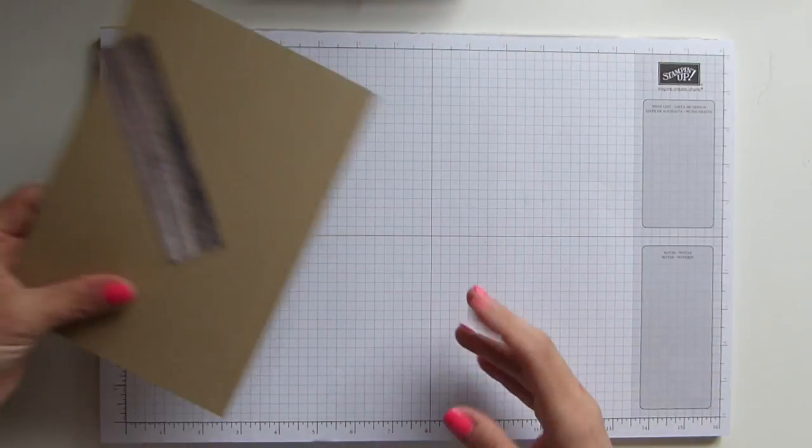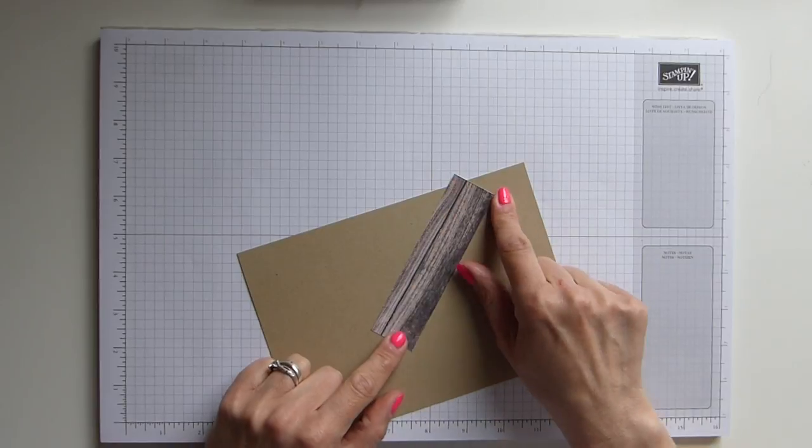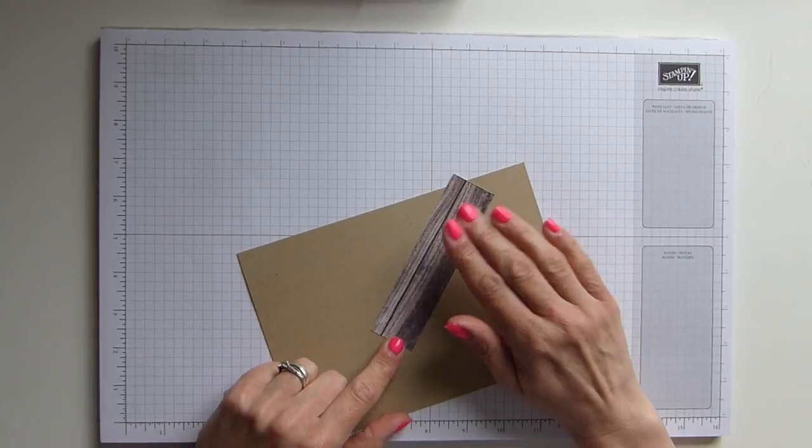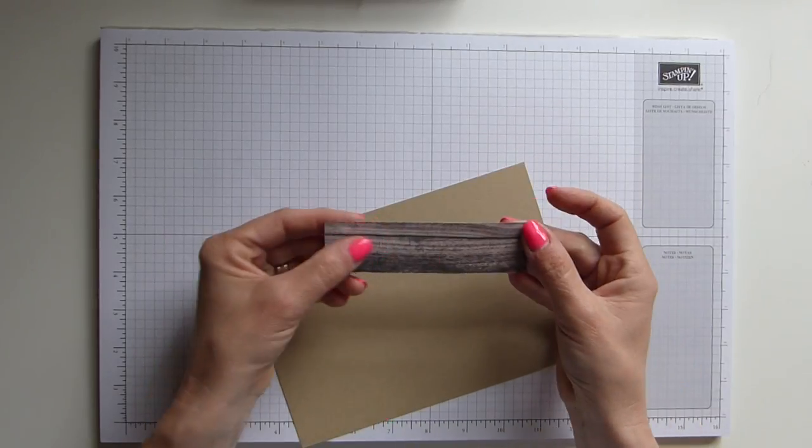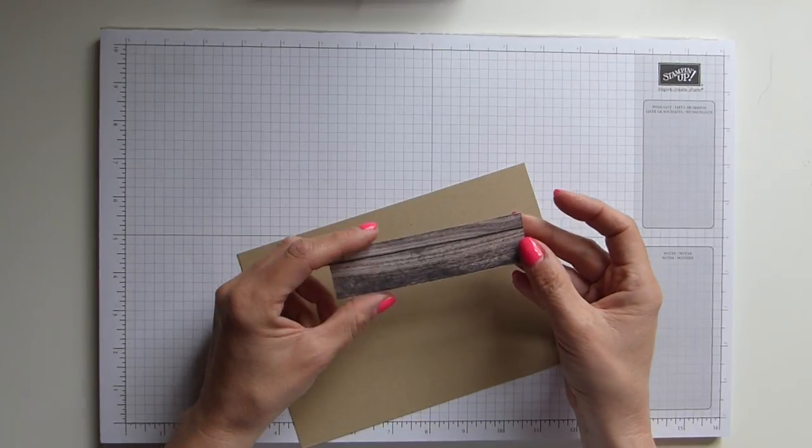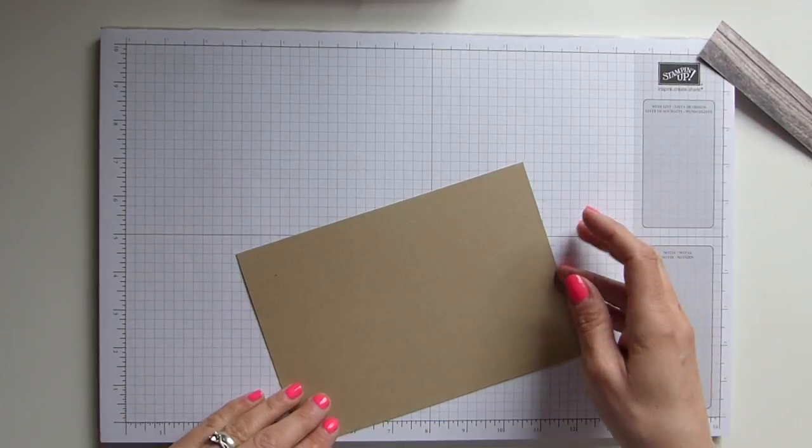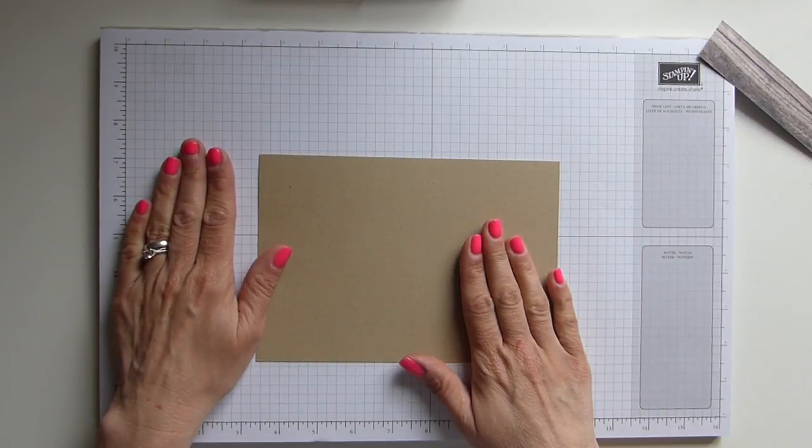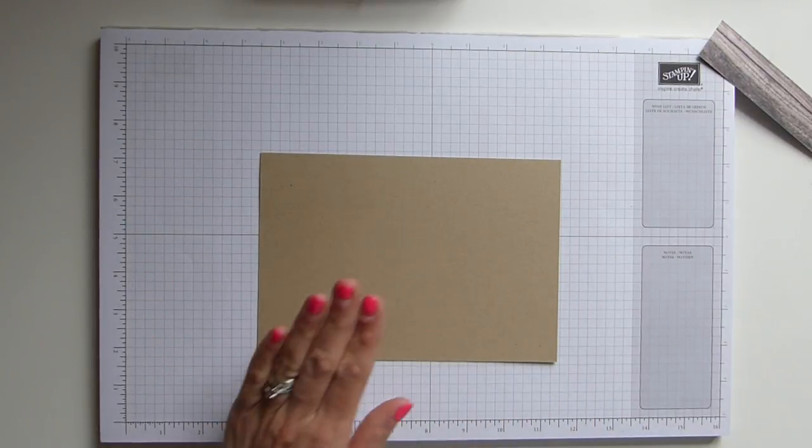I'm going with the Wood Textures DSP this time because I know that it is being carried over. So at least I know that you'll be able to get hold of this product. I'm simply using crumb cake cardstock.